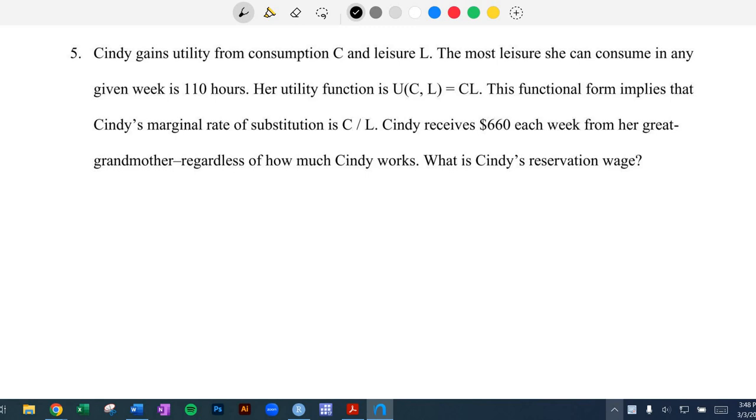So the functional form implies marginal rate of substitution is C over L. That's MRS. It's equal to the marginal utility of labor over the marginal utility of consumption. The first derivative of this with respect to L is just C, and the first derivative of utility with respect to C is just L. So that's how we get this marginal rate of substitution.